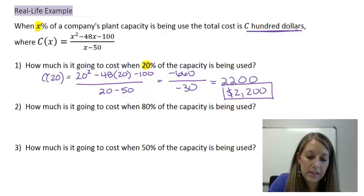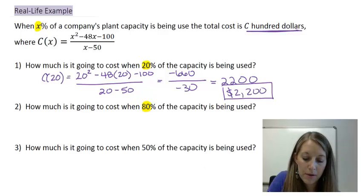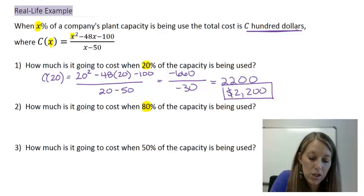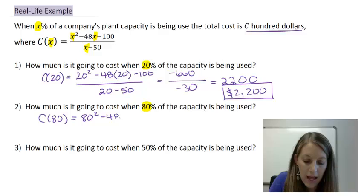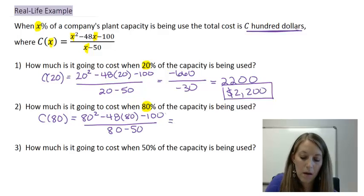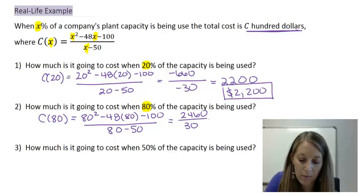In example 2, we do the exact same thing. We take our 80 percent, and we plug it into each X in our equation. So, C of 80 gives us 80 squared minus 48 times 80 minus 100, over 80 minus 50. The top simplifies to be 2,460.